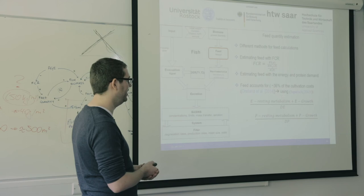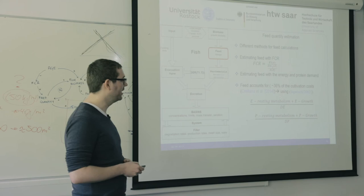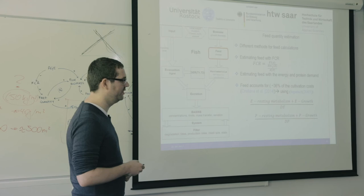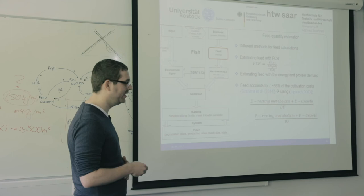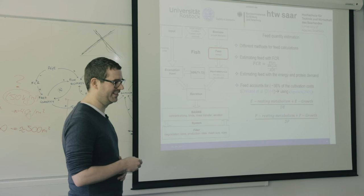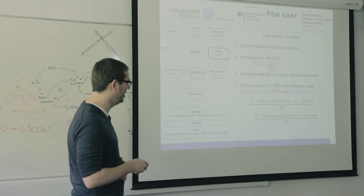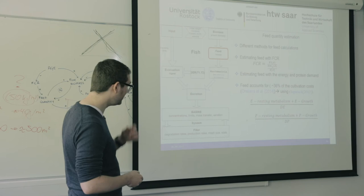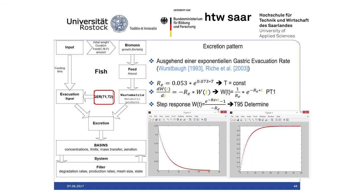How is it done? There are two energies the fish needs: energy for his metabolism — like if he's resting — and energy for his growth. This is divided by DE, the digestible energy in the feed. At the same time, he needs proteins for his metabolism and proteins for his growth, divided by the digestible protein. So it's E resting metabolism plus E growth, and P resting metabolism plus P growth.